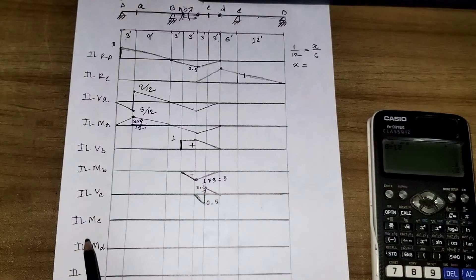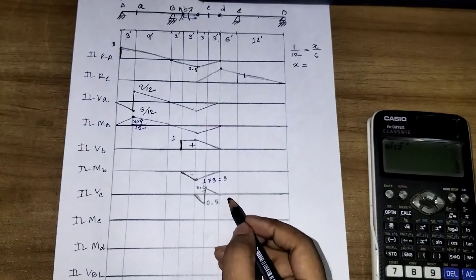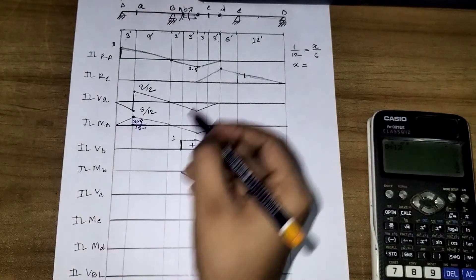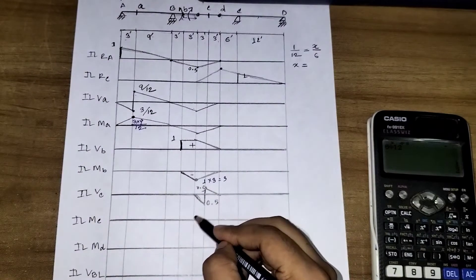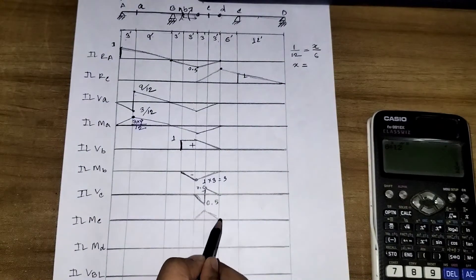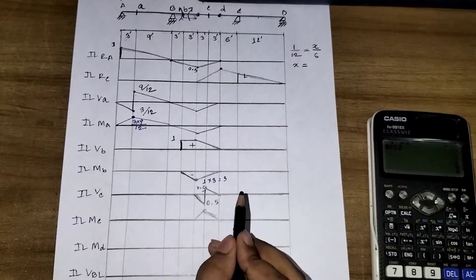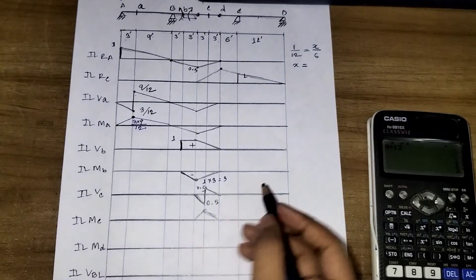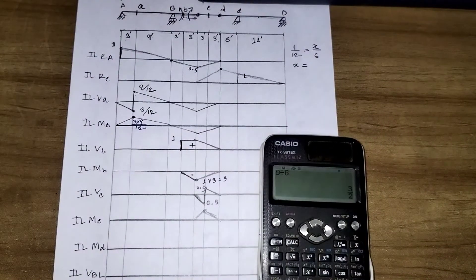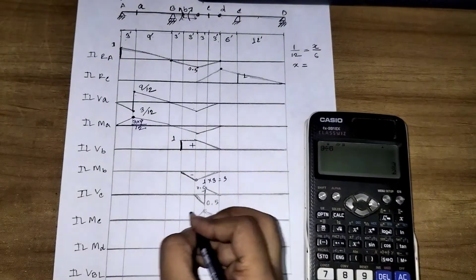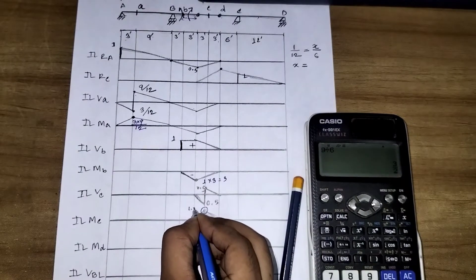Next, the MC point — the moment at C. C point is a pin. The calculation is 9 divided by 6, which equals 3 by 2, giving 1.5. So the ordinate at C point is 1.5.